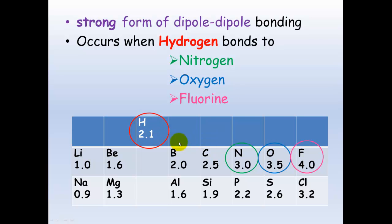And if you have a look at these, you will see that these have got a higher electronegativity, and hydrogen's got a lower electronegativity. Thus, this will create quite a big differential between the positive and the negative, and this is what causes it to be a strong form of dipole-dipole force.